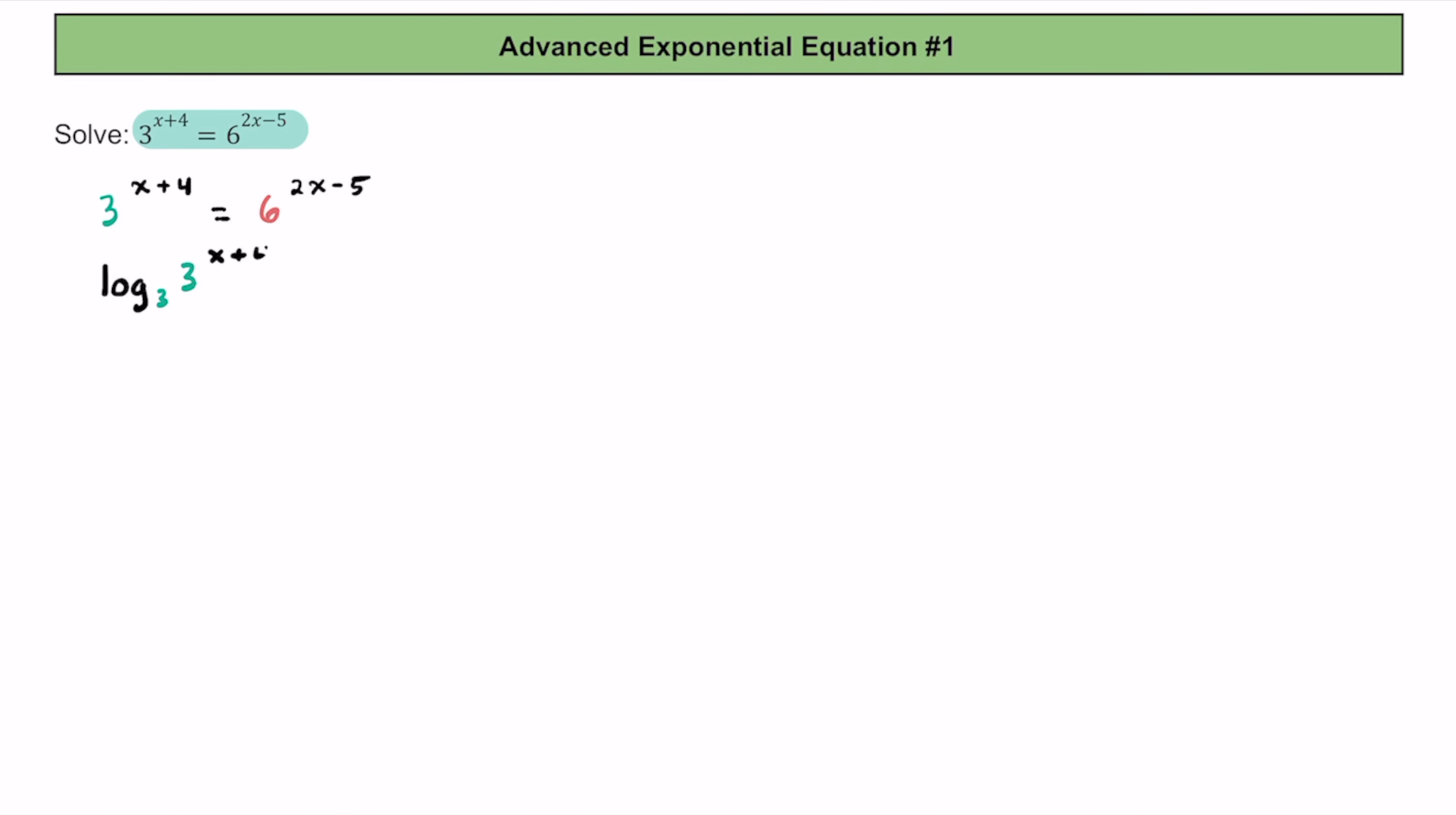On the left side here, we're going to have log base 3 of 3 to the x plus 4 power. On the right side of the equation, we're going to have log base 3 as well, but we're also going to have this 6 to the 2x minus 5 power.